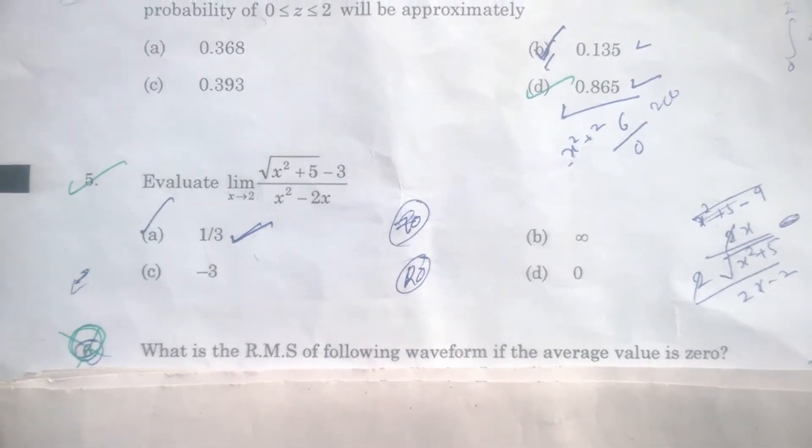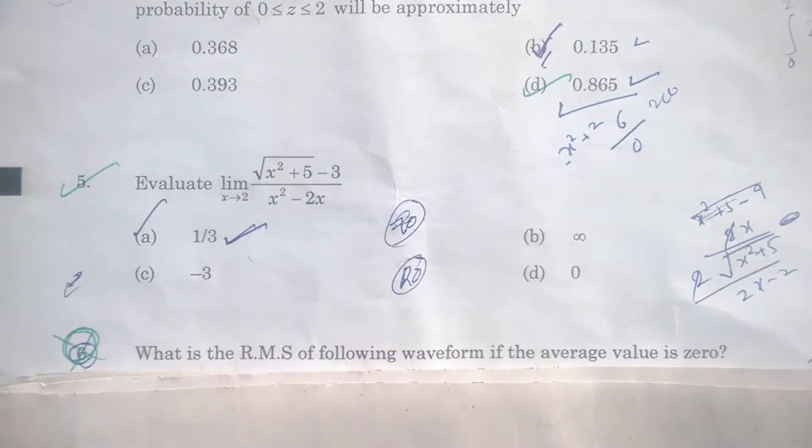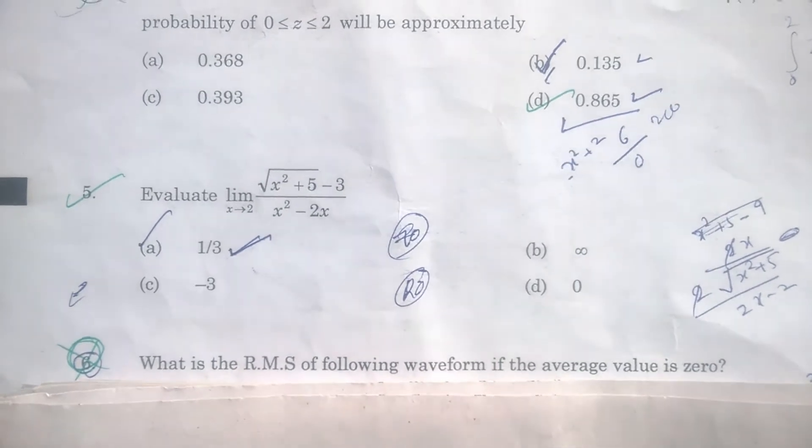The question is: evaluate limit x tends to 2, √(x²+5) - 3 divided by √(x²-2x).